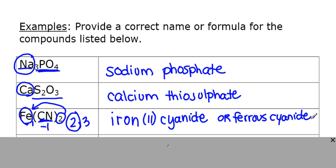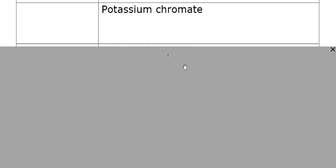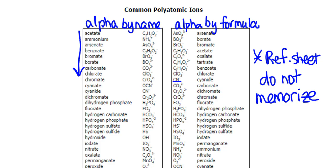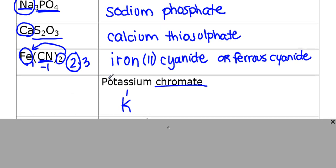Now let's try the reverse: given a name, write the chemical formula. For potassium chromate, potassium is K with a charge of one. We go to the reference list by name, find chromate — CrO₄ with a negative two charge. Then we do the crisscross: the 2 comes down to potassium and the 1 comes down to chromate, giving us K₂CrO₄.